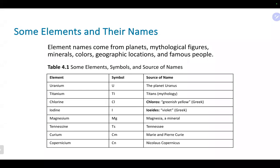A molecule simply means two or more atoms together. A compound is different — it requires two or more atoms of different elements. For example, H₂ is both an element and a molecule but not a compound because it only contains hydrogen. Water is a molecule and also a compound because it contains hydrogen and oxygen — two different elements. Water is not an element.